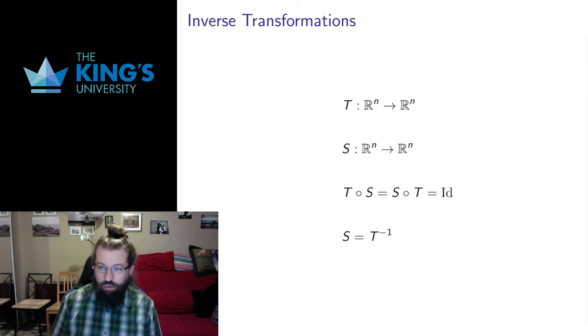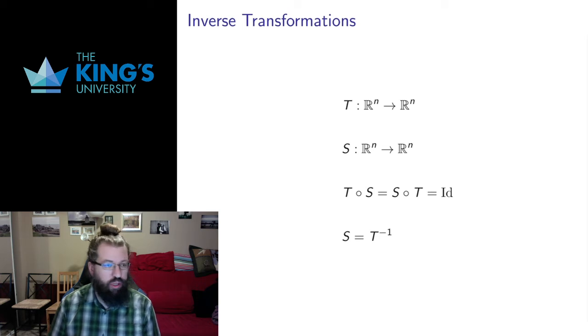If we have a rotation, we can rotate the same angle in the opposite direction to undo the rotation. If we have a reflection, we can undo the reflection by just doing the reflection again, getting back to where we started. The whole idea is getting back to where we started.